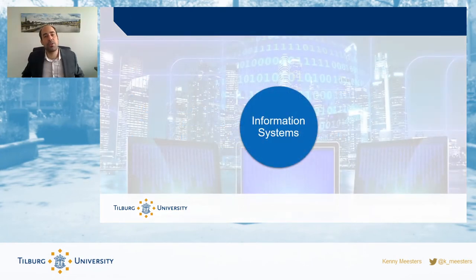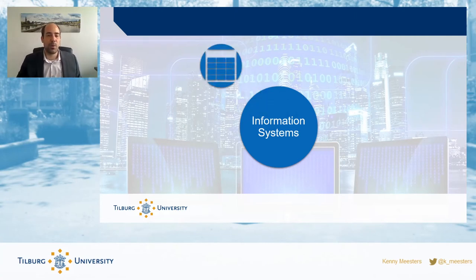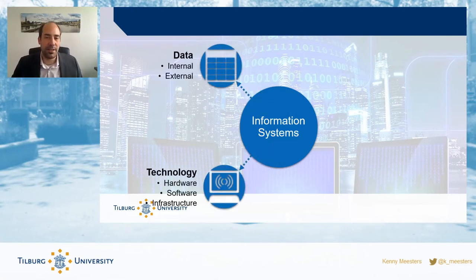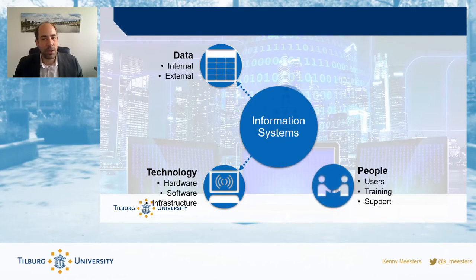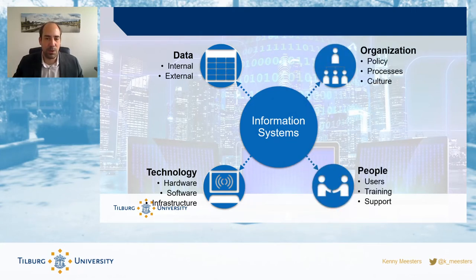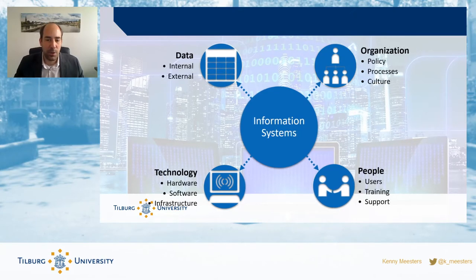Let's wrap up by talking again about the four dimensions of information systems: data, information, technology — including software and hardware — people such as customers using the systems, and the organization, meaning how you are structured. Let's look at those four components in the context of e-commerce.